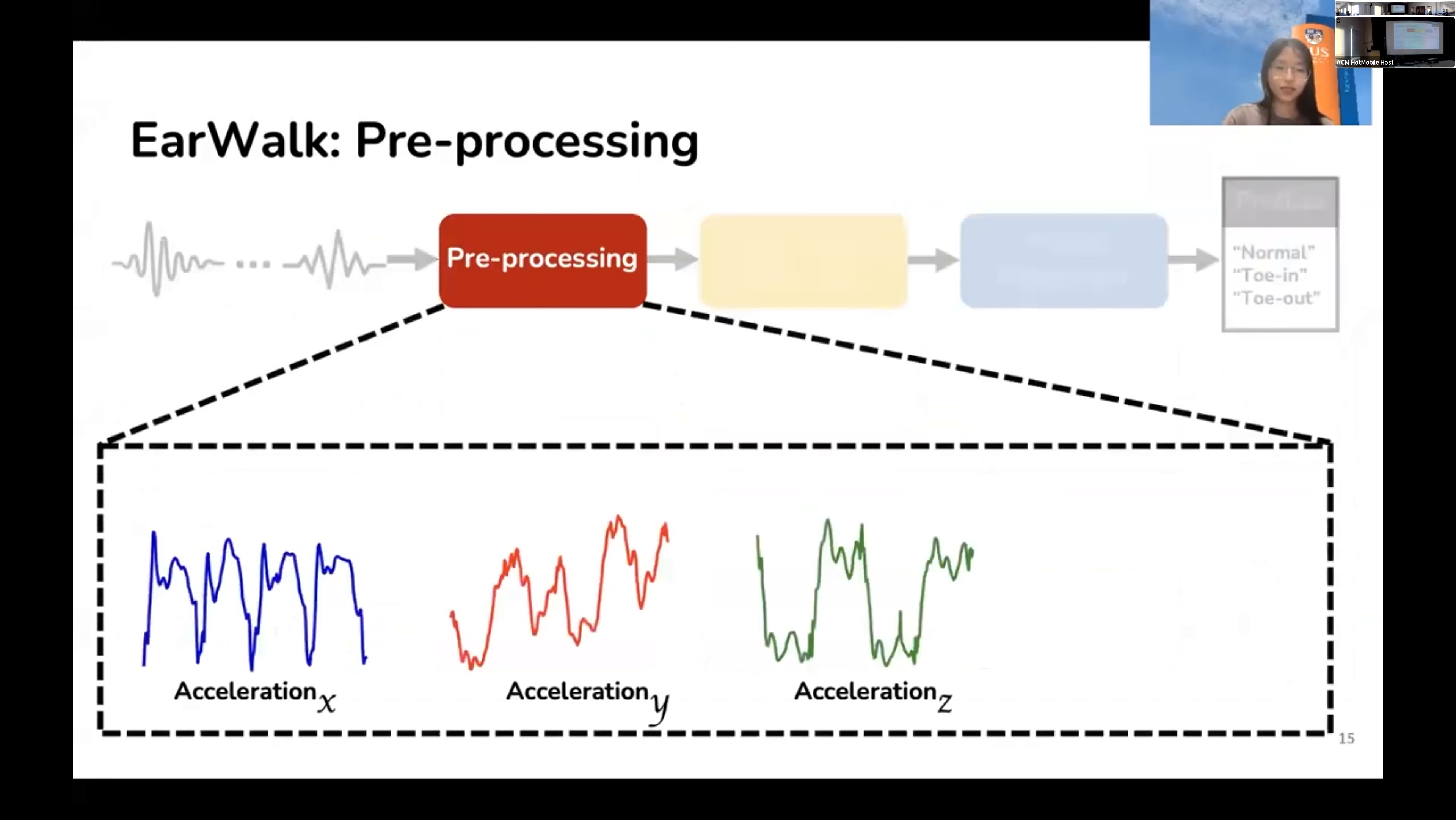The pre-processing module takes as inputs the raw accelerations along three directions: x, y, and z. Because all three axes may contain parts of the useful information, we want to combine them together. According to our observation, acceleration z has larger differences across three walking postures. Thus, we compute the weighted average and assign more weightage to acceleration z for our implementation. Then, we use the weighted average as our selected feature and perform analysis based on it.